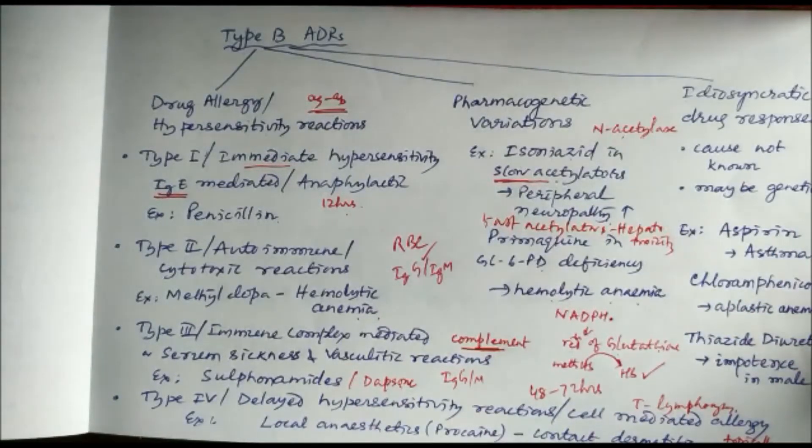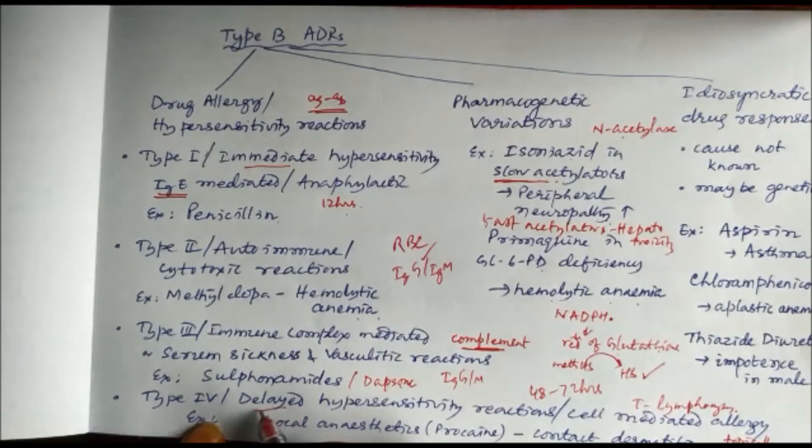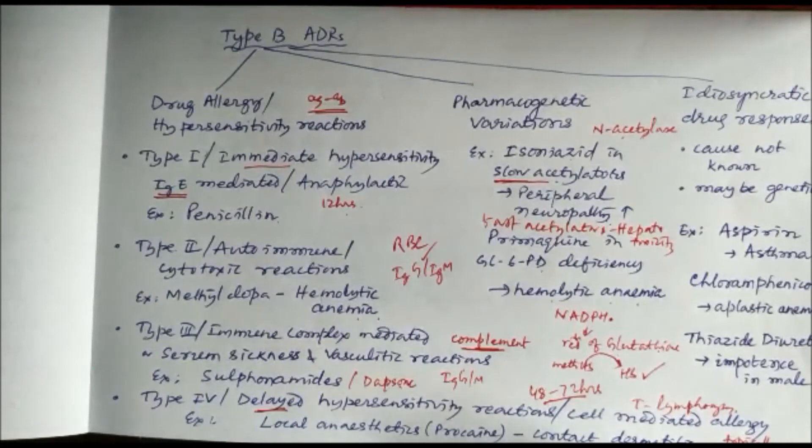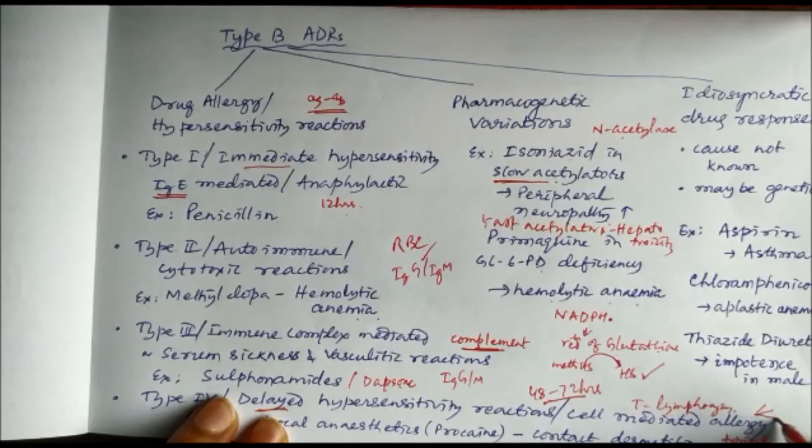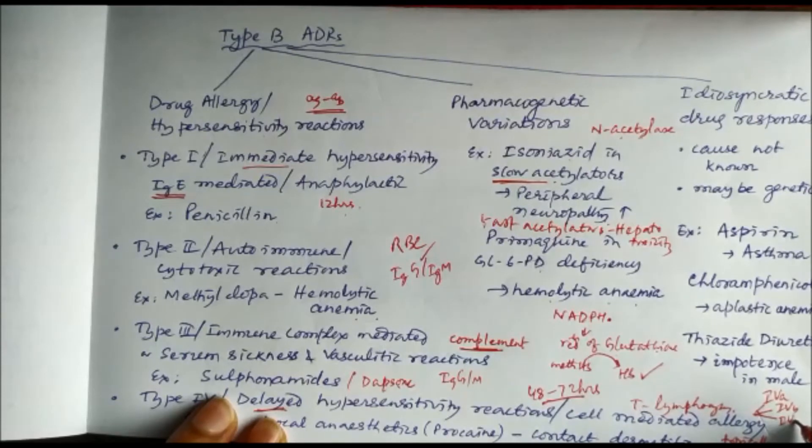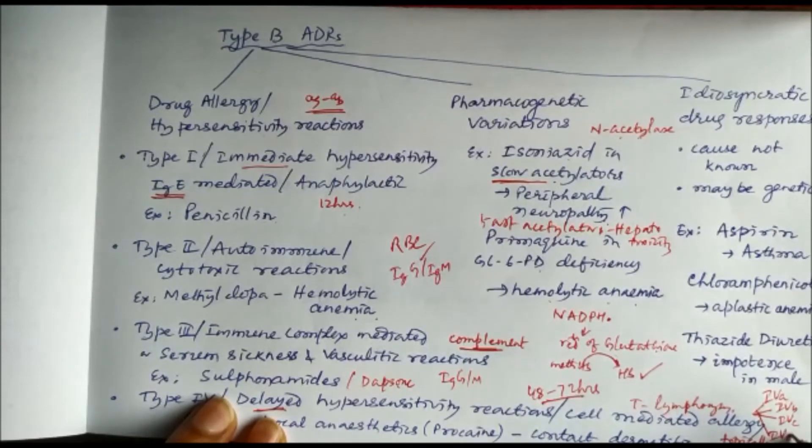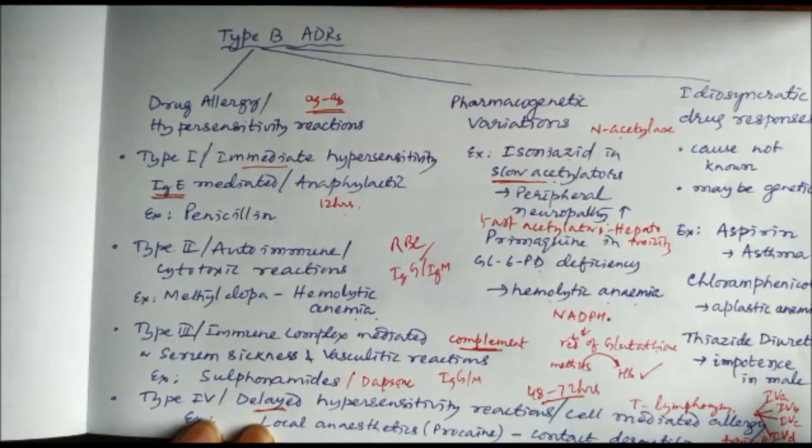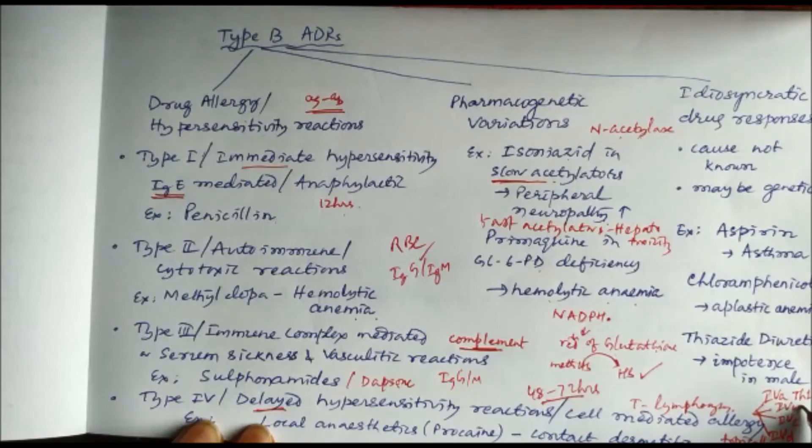Then we have Type 4 or delayed hypersensitivity reactions or cell-mediated allergy. Here, mostly the drugs used topically can cause these type of reactions, and they are called delayed because it takes 48 to 72 hours to show these reactions. A very good example is your local anesthetic like procaine causing contact dermatitis. Here T lymphocytes are involved, and this can be of four types: Type 4a, 4b, 4c, and 4d, based on the type of T lymphocyte involved. In 4a there is T helper 1 cells, T helper 2 cells in 4b, cytotoxic T cells in 4c, and T lymphocytes with granulocyte-macrophage colony-stimulating factors are involved in 4d.